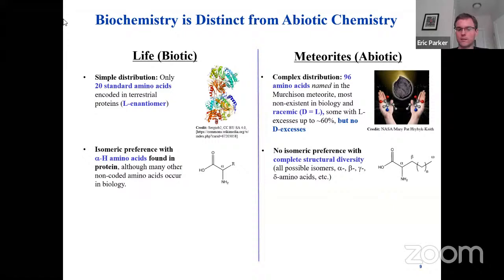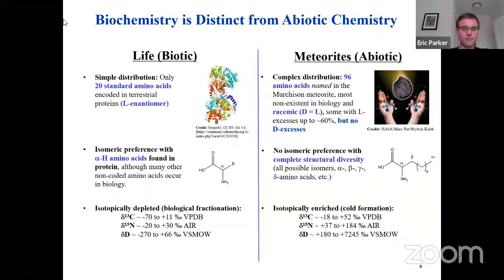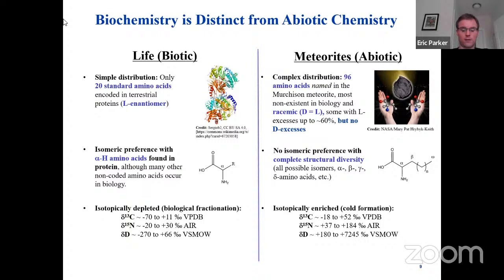From life, we can deduce that the 20 essential amino acids used in protein synthesis are exclusively of the L enantiomer. Whereas meteorites — non-terrestrial bodies — have about 100 different amino acids identified so far, and the chiral amino acids tend to be racemic, meaning an equal amount of D and L enantiomers, but there are select examples where you can have L enantiomeric amino acid excesses as high as 60%. Life tends to use alpha hydrogen amino acids in protein synthesis, whereas amino acids observed in meteorites don't have this preference — you can get a complete suite of structural diversity including alpha, beta, gamma, delta, and omega amino acids.